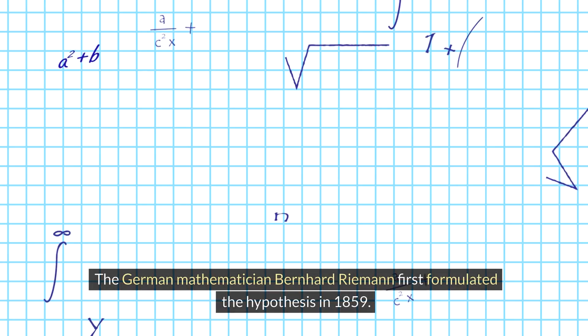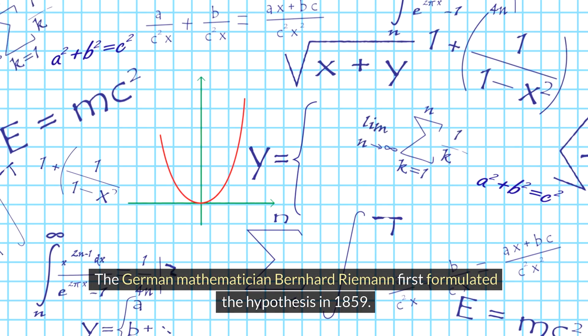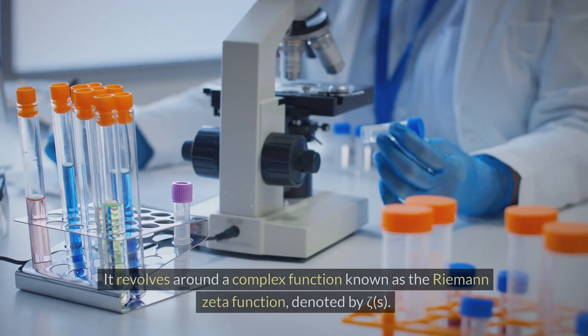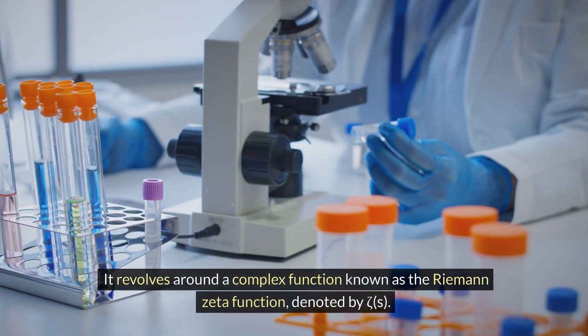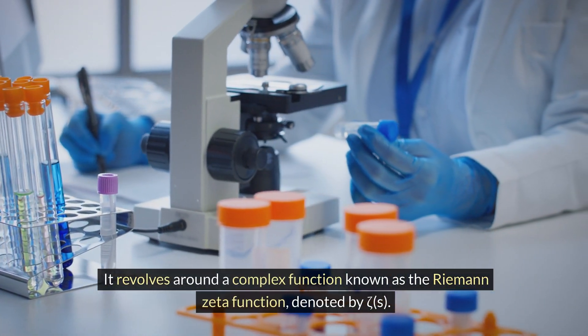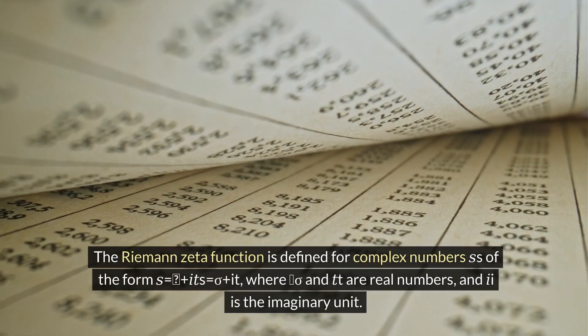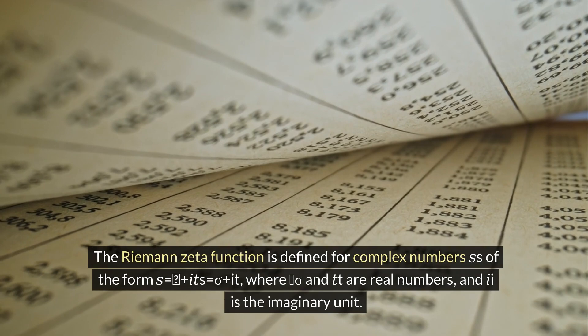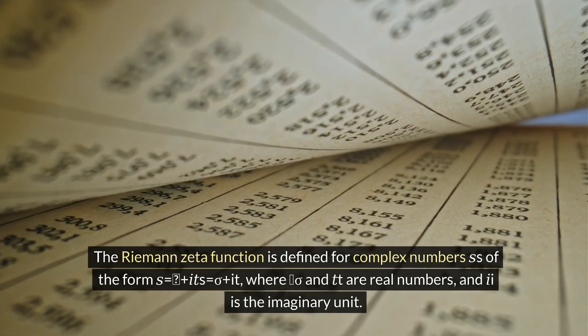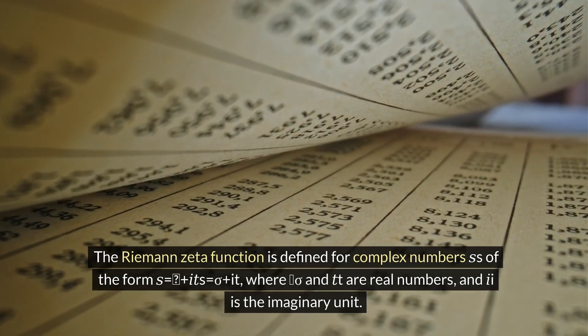The German mathematician Bernhard Riemann first formulated the hypothesis in 1859. It revolves around a complex function known as the Riemann zeta function, denoted by ζ(s). The Riemann zeta function is defined for complex numbers s of the form s = σ + it, where σ and t are real numbers and i is the imaginary unit.